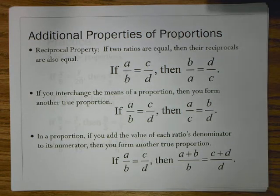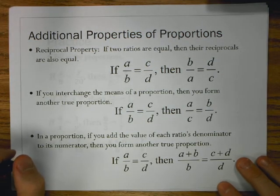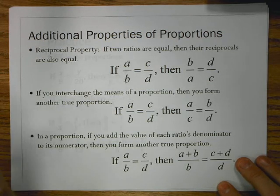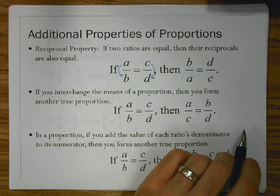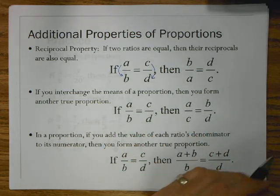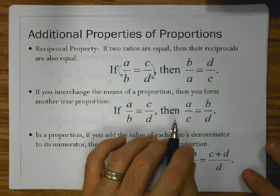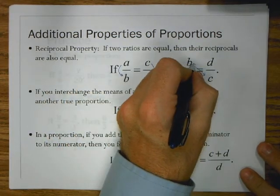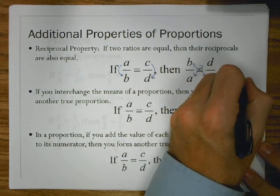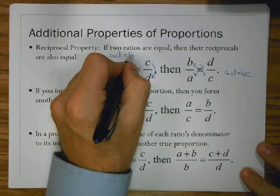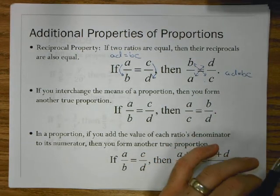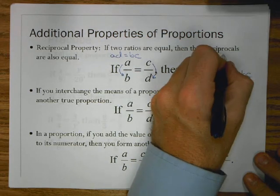The first property is the reciprocal property, which tells us: if two ratios are equal, then their reciprocals are also equal. So if I have a/b = c/d and I flip them, I get b/a = d/c. Using the cross product to verify: a×d = b×c in the original proportion, and a×d = b×c in the flipped one — they're the same.